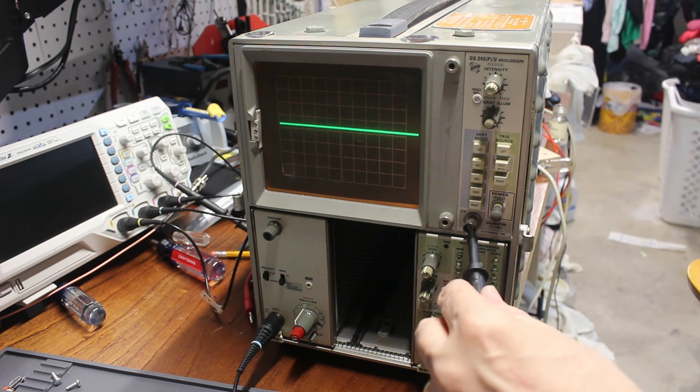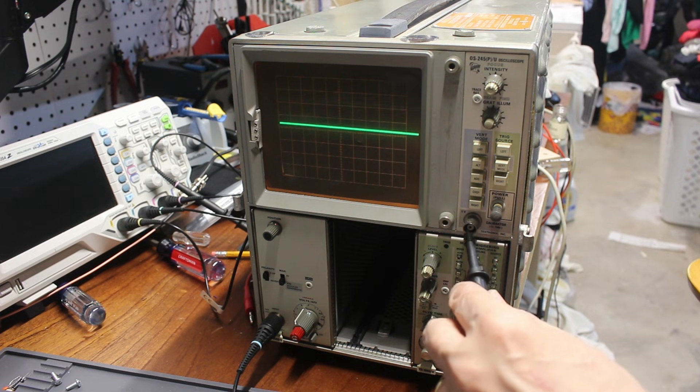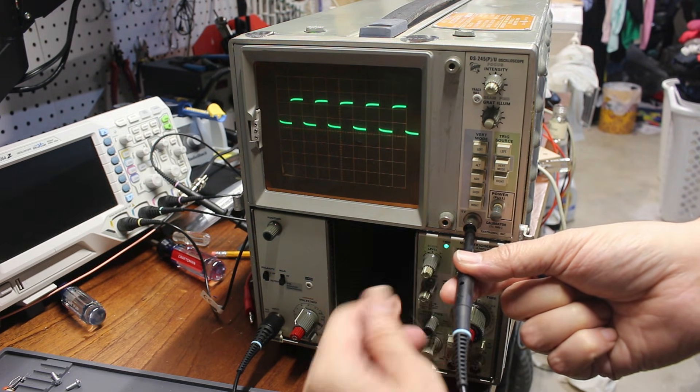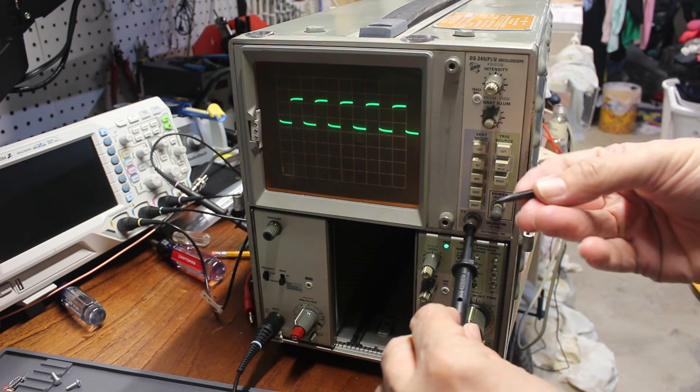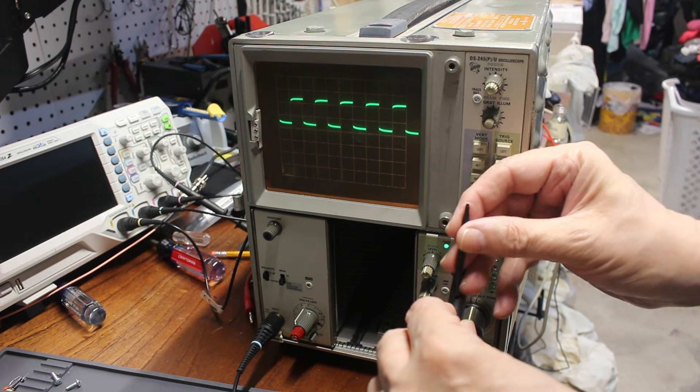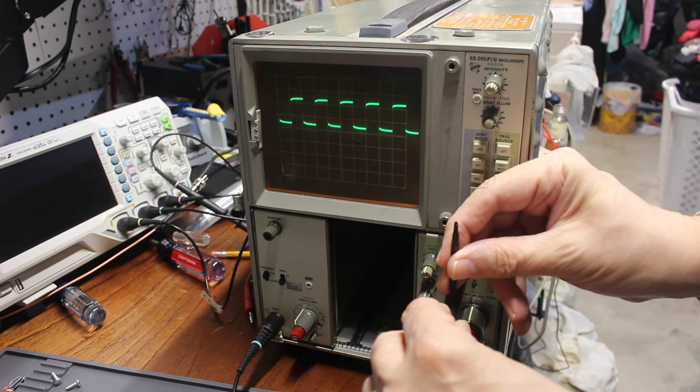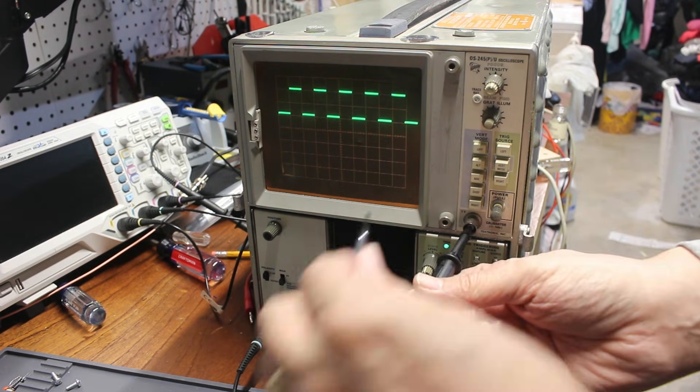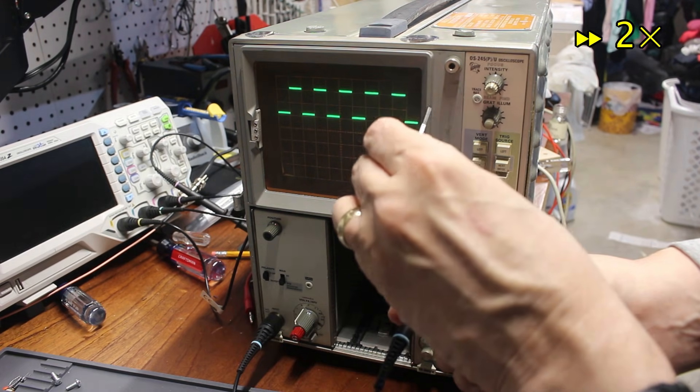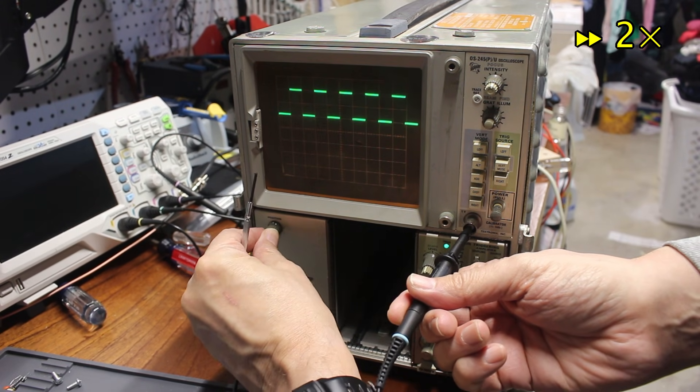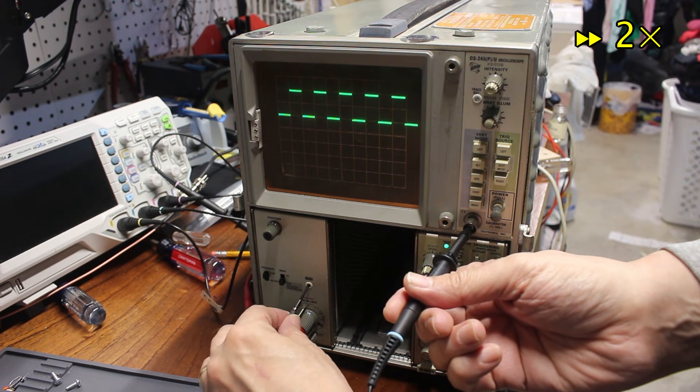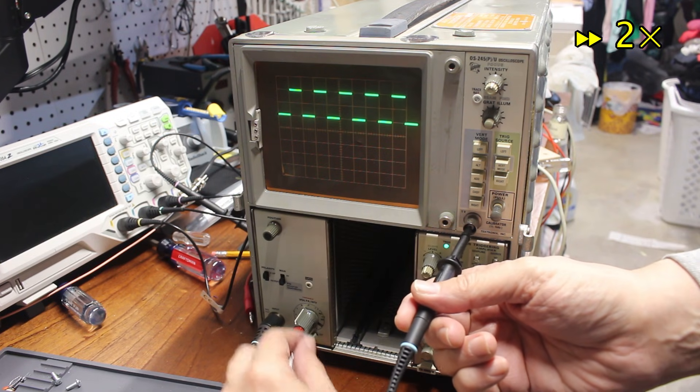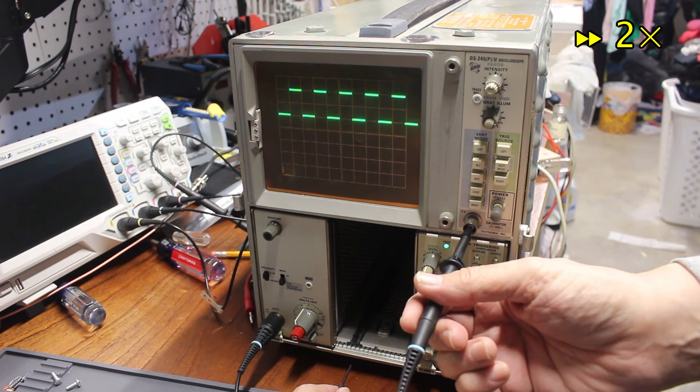I'll plug in a probe and look at the built-in calibrator. The trigger level needs a tweak. And so does the compensation on the probe. And the trace rotation needs a bit of touching up, along with the vertical gain. After that, the display looks great. One kilohertz square wave at one volt peak to peak.